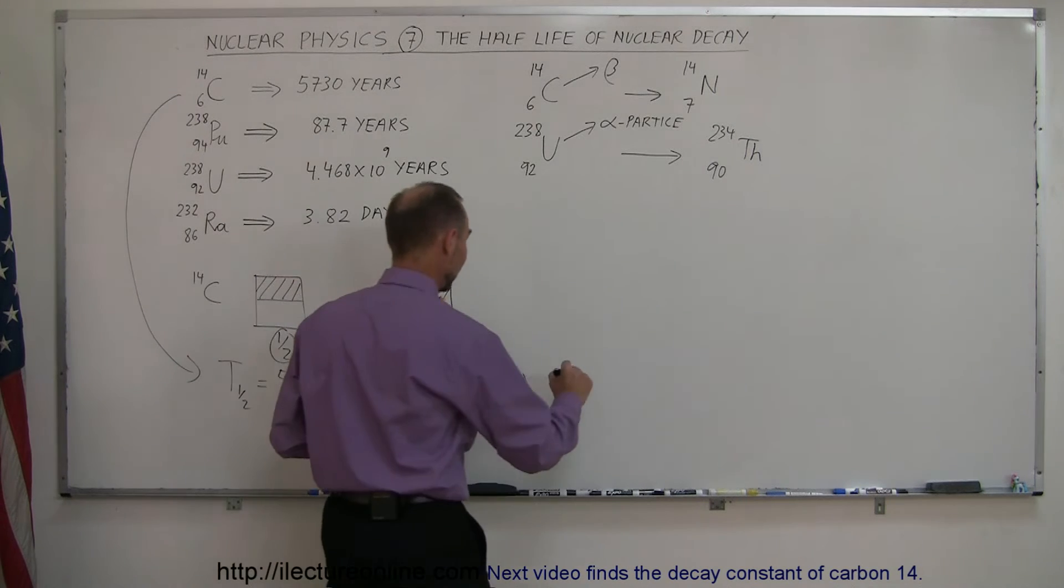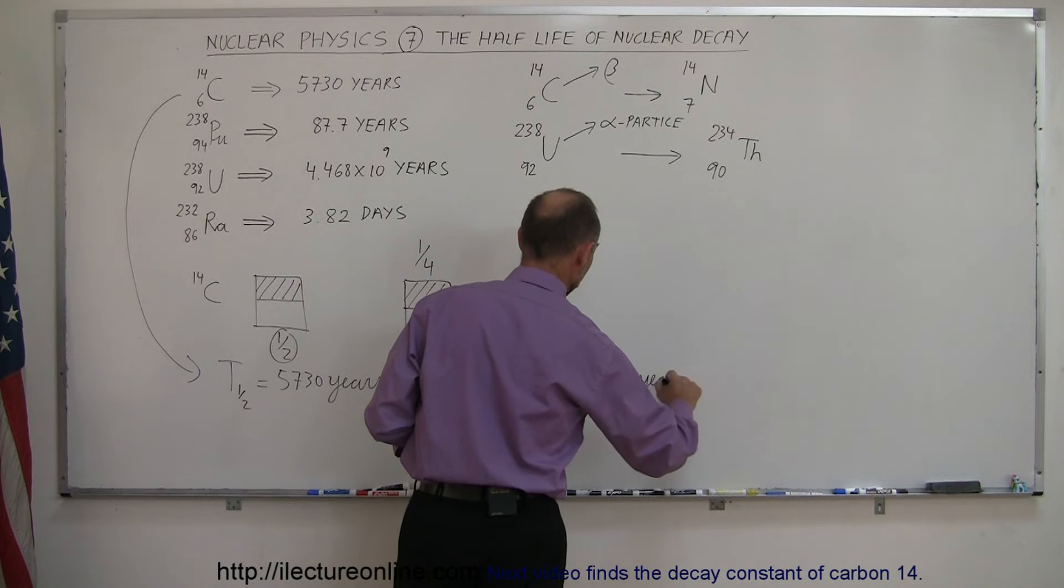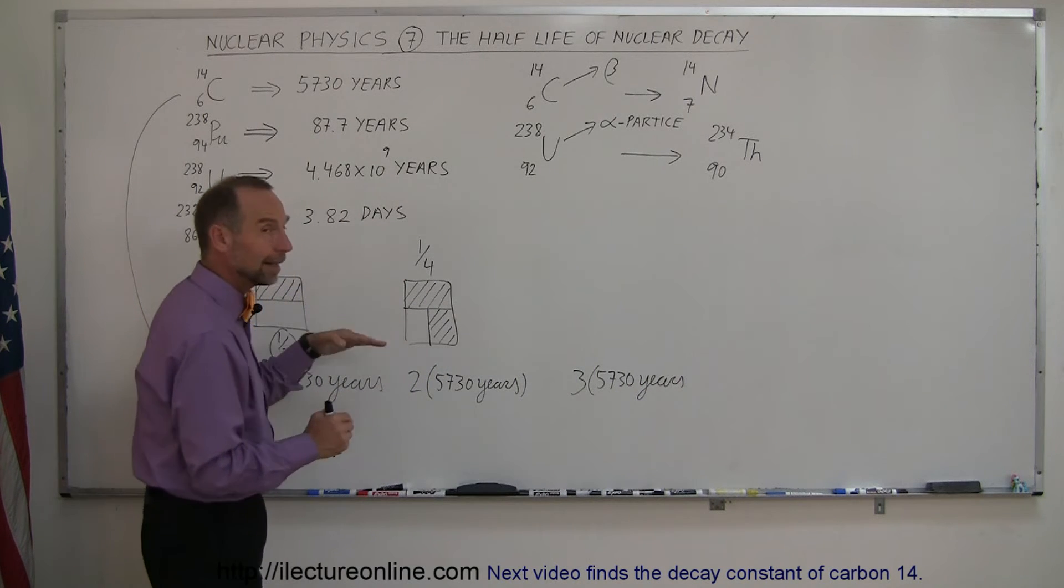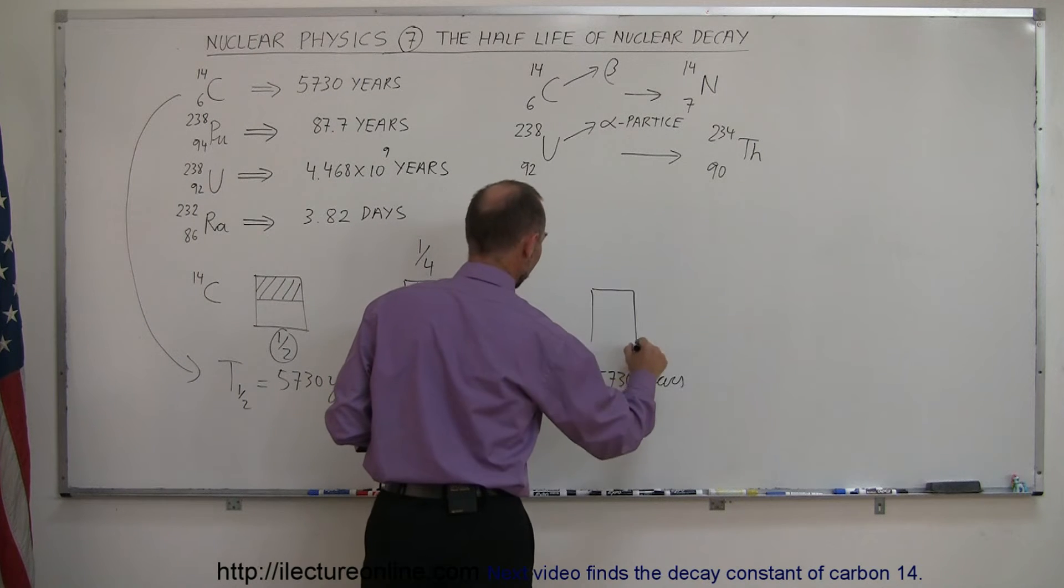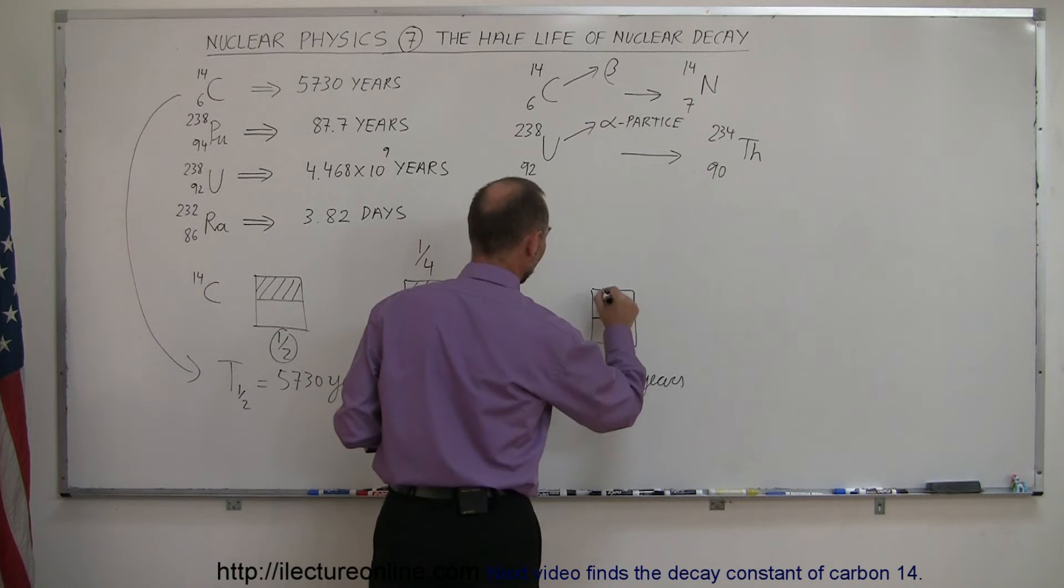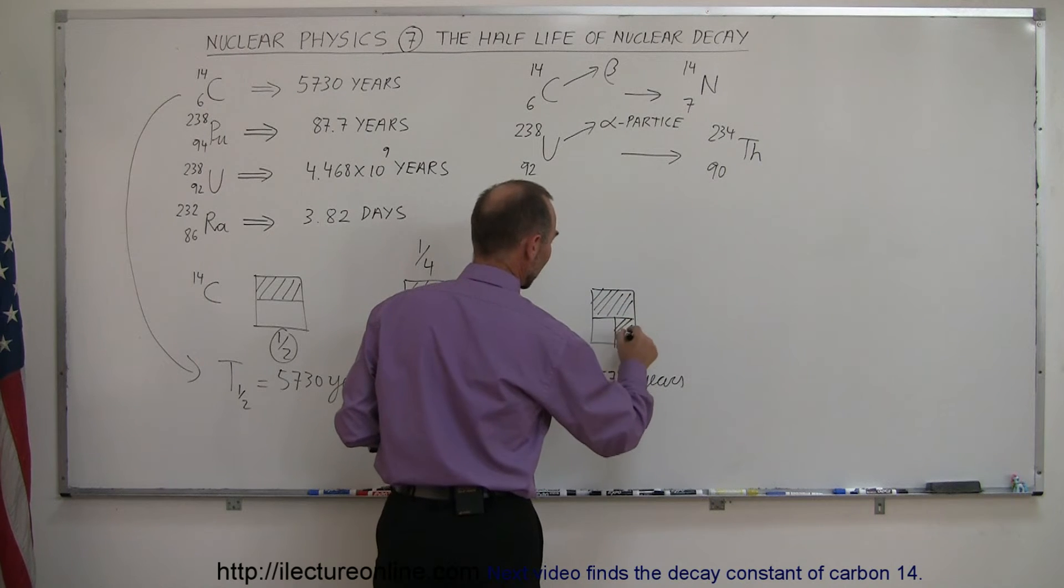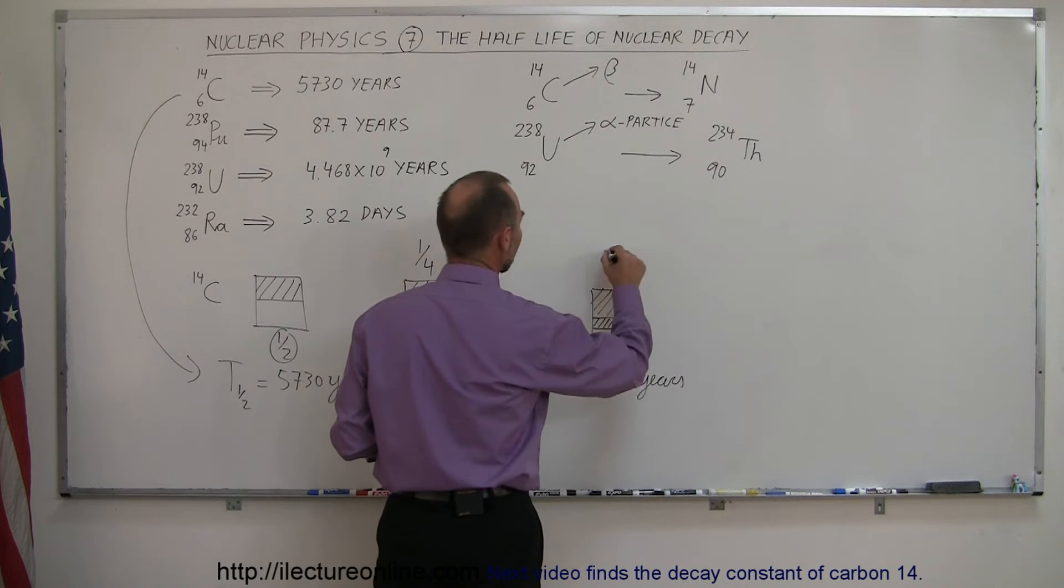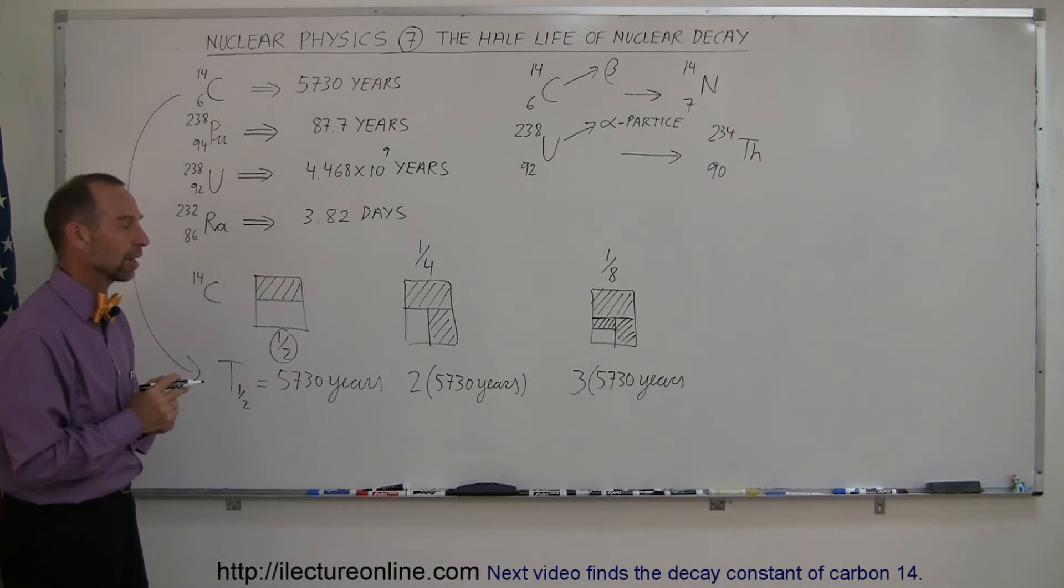After three half-lives, three times 5730 years, again, half of what was remaining will then also decay, and now you only have one-eighth of the original sample left. So after another half-life, the first half was gone after the first half-life, this was gone after the second half-life, and of what's remaining, that will be gone, so now you only have one-eighth of the original sample still being radioactive carbon-14.